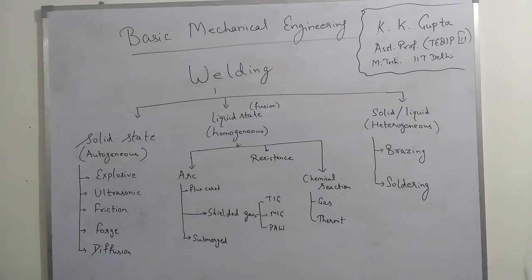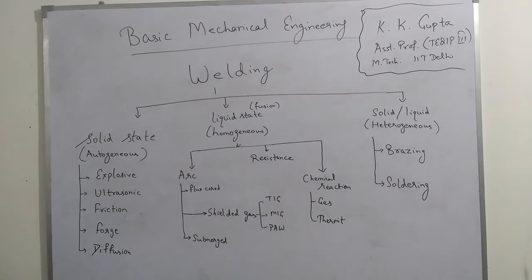The second category is Homogeneous welding. In this we use filler material, and both the parent metal and the filler material have the same chemical composition. That's why it is called homogeneous welding. It is also called liquid state welding, because in this the parent metals are melted and then with the help of filler material we weld the metals.